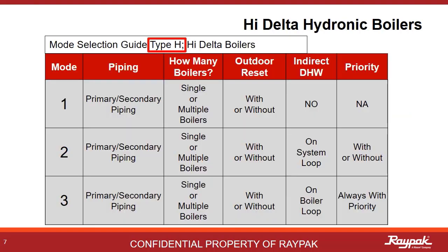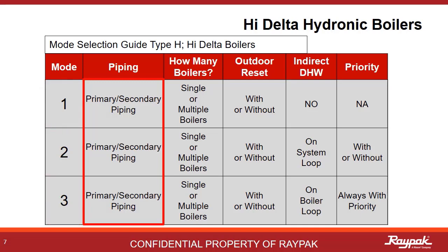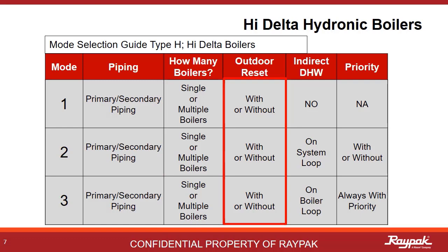This is a summary table for the hydronic-type boilers. There are three modes to choose from: Mode 1, 2, and 3. All must be plumbed primary-secondary, as the high-delta boilers are low-mass. All three modes can be applied to single or multiple boilers, and all can run with or without outdoor reset.